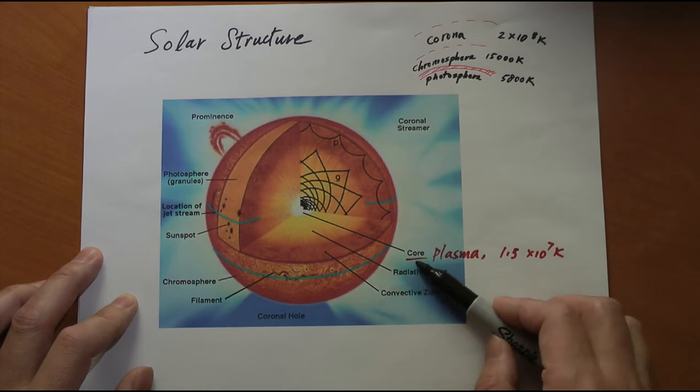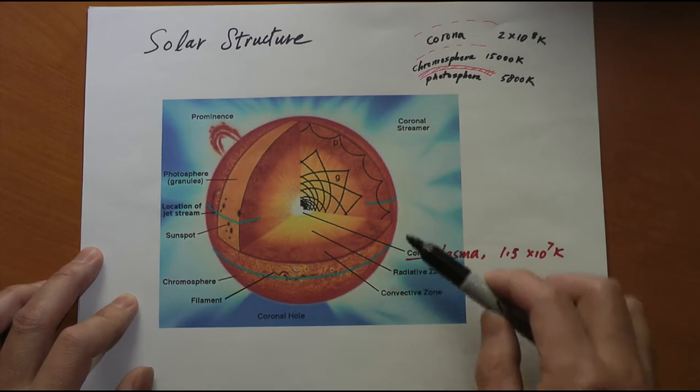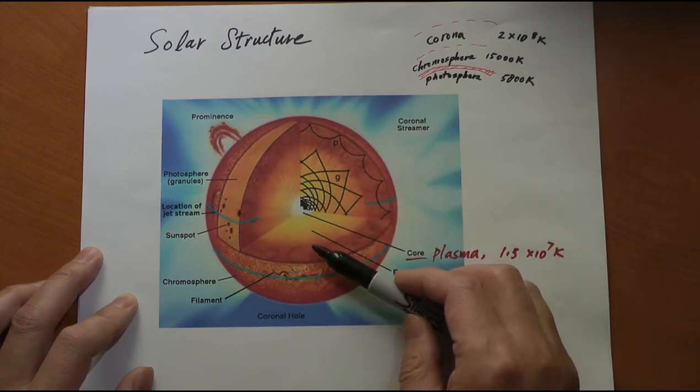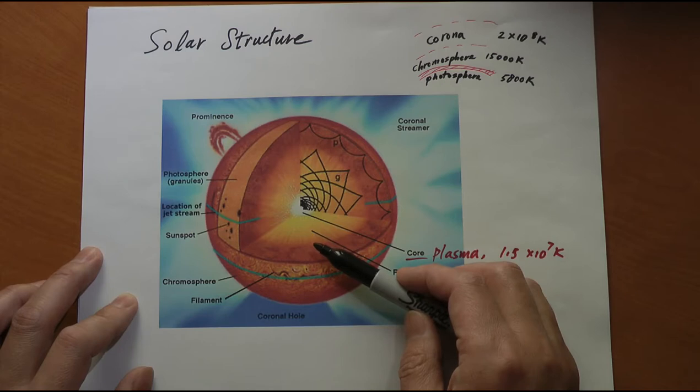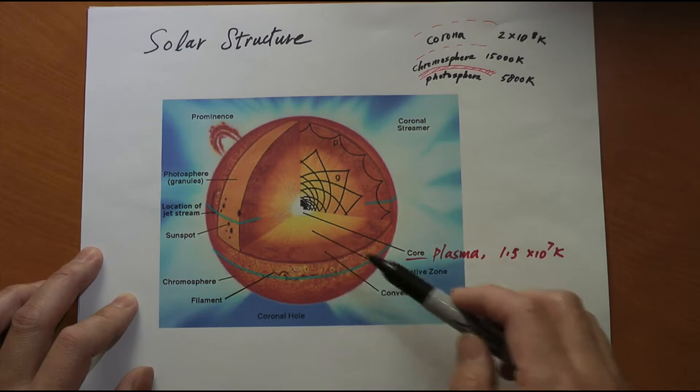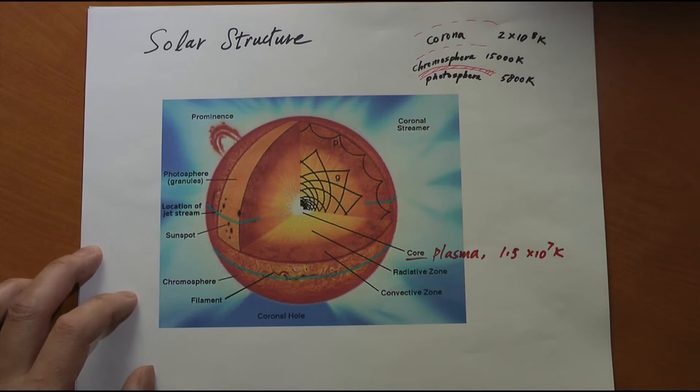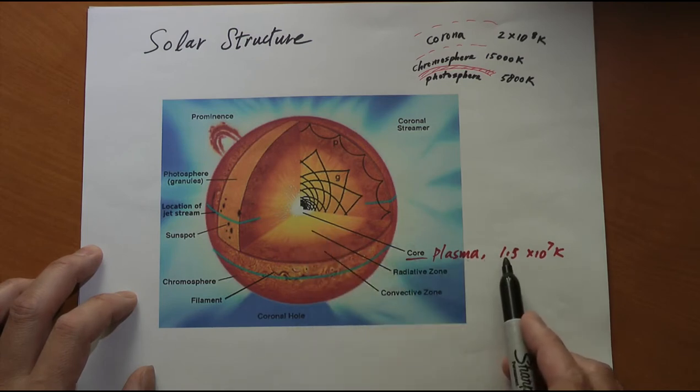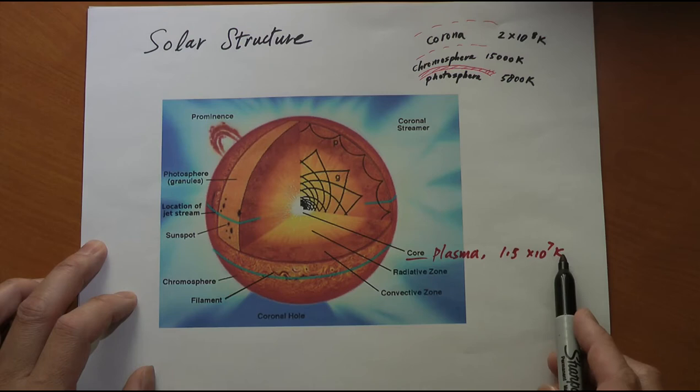At the core of the sun, the pressure is really high because the gravitational pull of the sun is so much greater due to the enormous mass of the sun, which is about 2 times 10^33 kilograms. Compare that with the mass of the Earth, which is of the order of 10^24. There's a huge difference. The temperature in the interior is about 150 million Kelvin, 1.5 times 10^7 Kelvin.